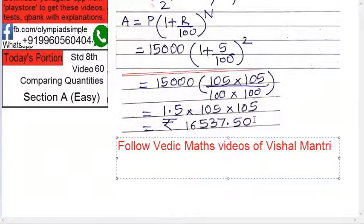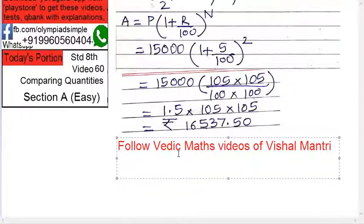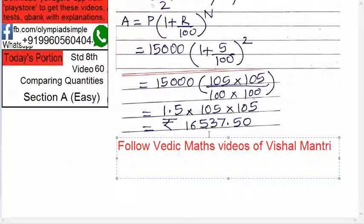Always remember for any multiplication, division, addition, bigger numbers, squares, cubes — Vedic Maths, there is no alternative to Vedic Maths. Vedic Maths is so easy that you can do it on your fingers only. Nothing else is needed. So the answer is 16,537.5.